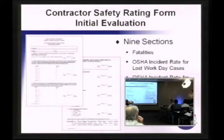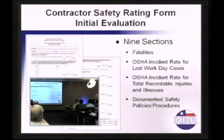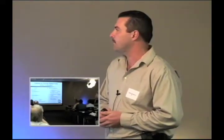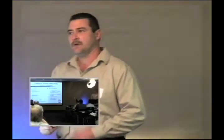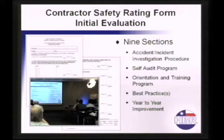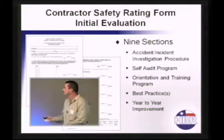This particular form is made up of nine sections. It's fatalities, the OSHA incident rate for lost workday cases, OSHA incident rate for total recordable injuries and illnesses, documented safety policies procedures, accident incident investigation procedure, self-audit program, orientation and training program, best practices, and year-to-year improvement. So this is the documentation you're actually going to be turning in, remember, on a disc with those other two forms to HBR.